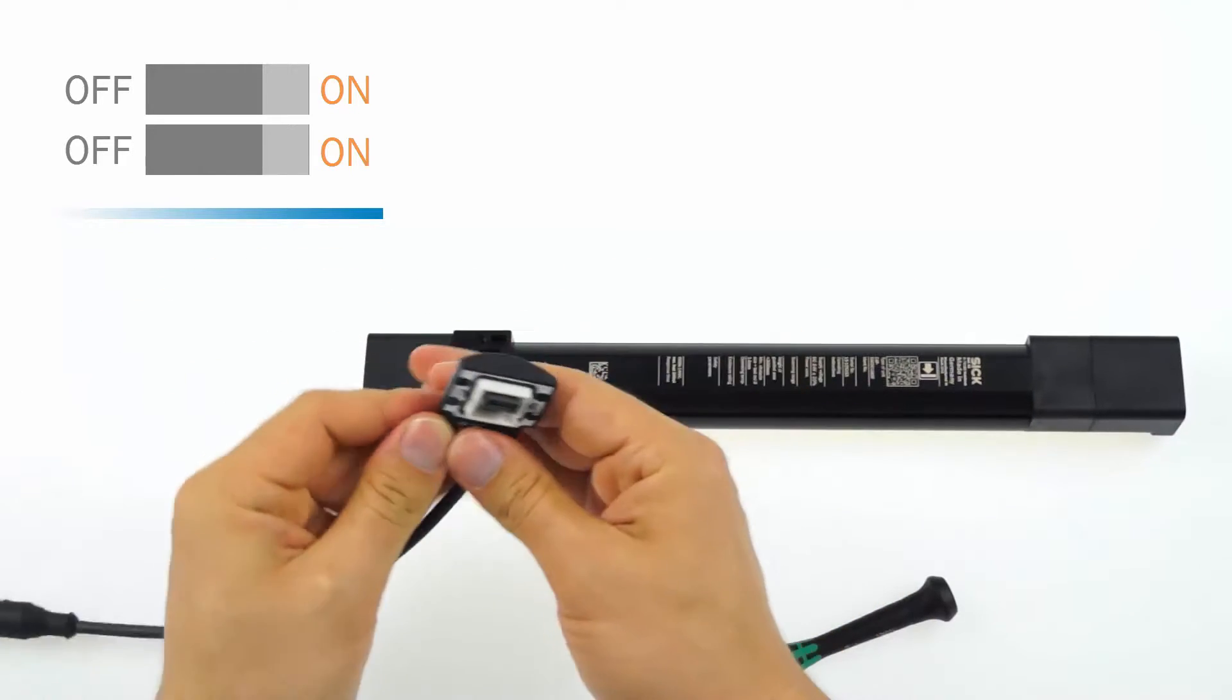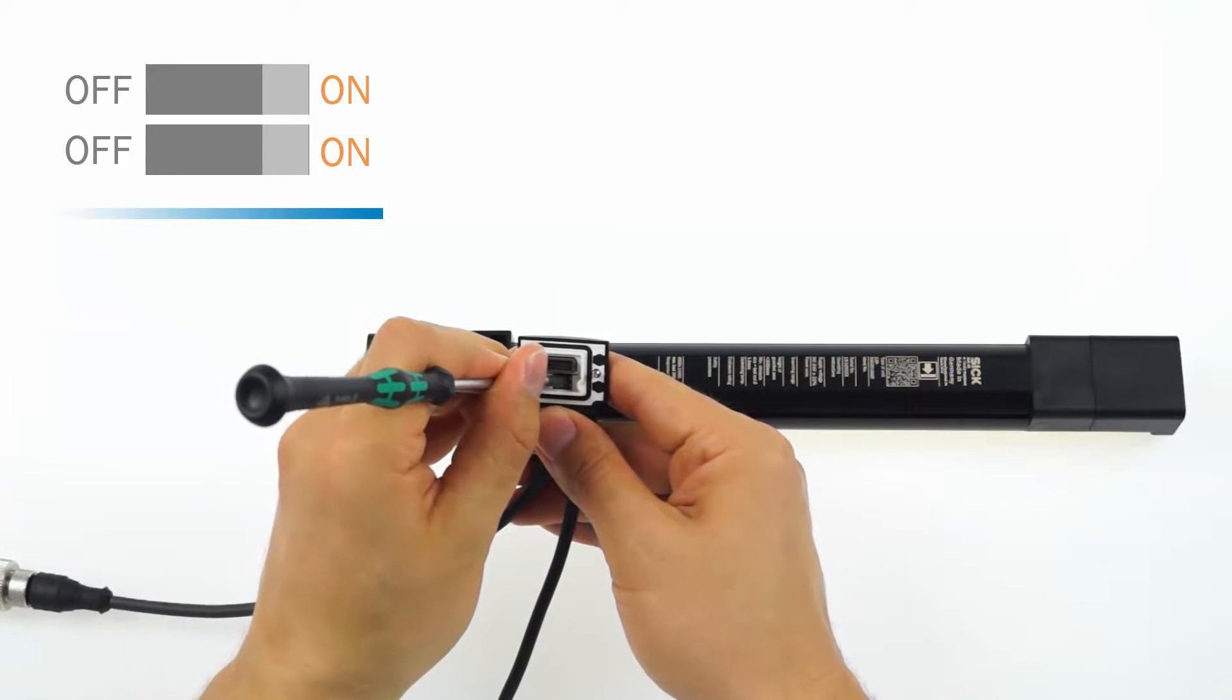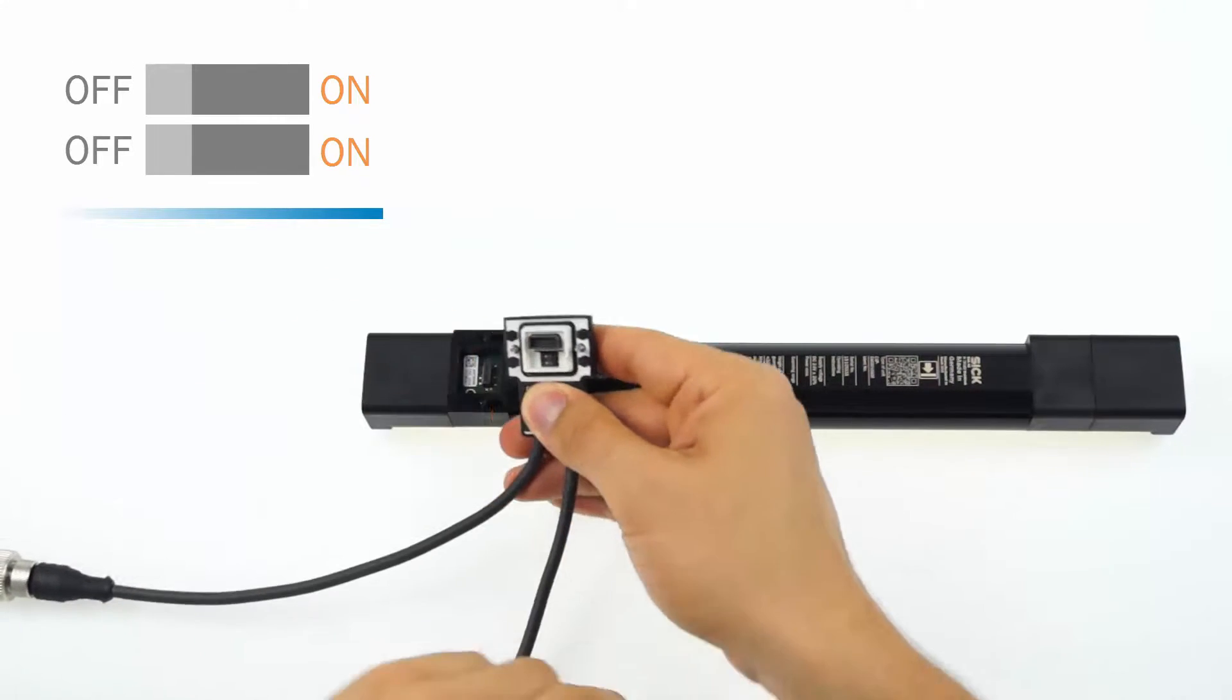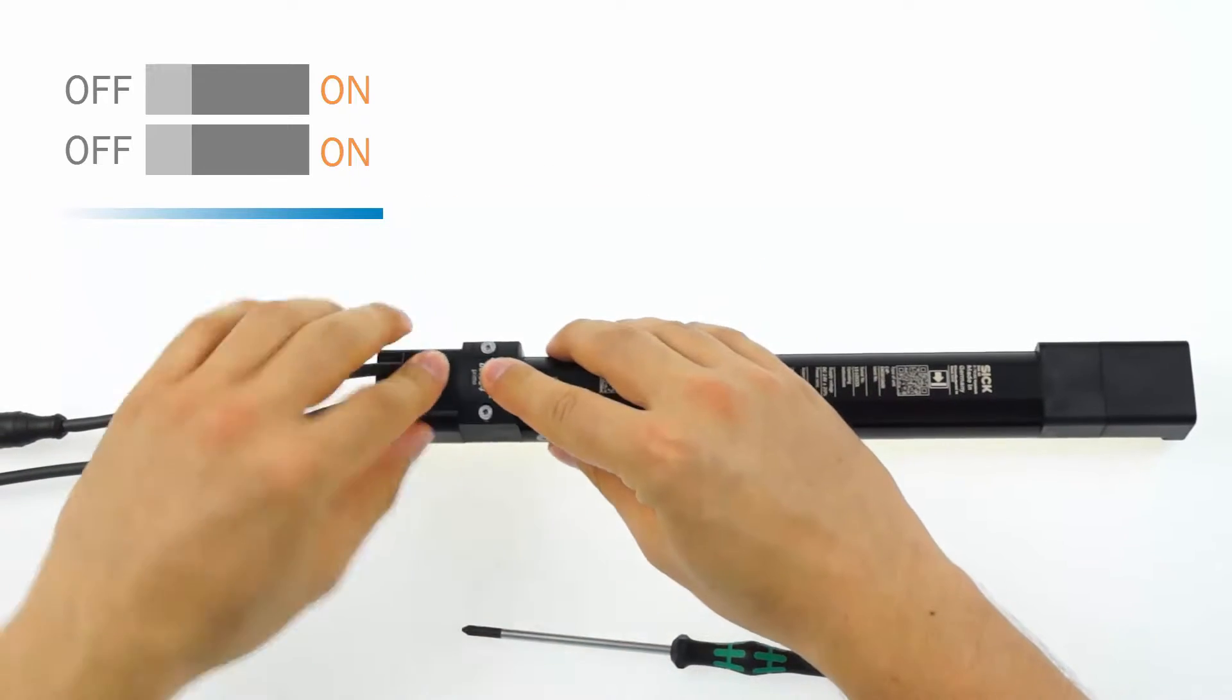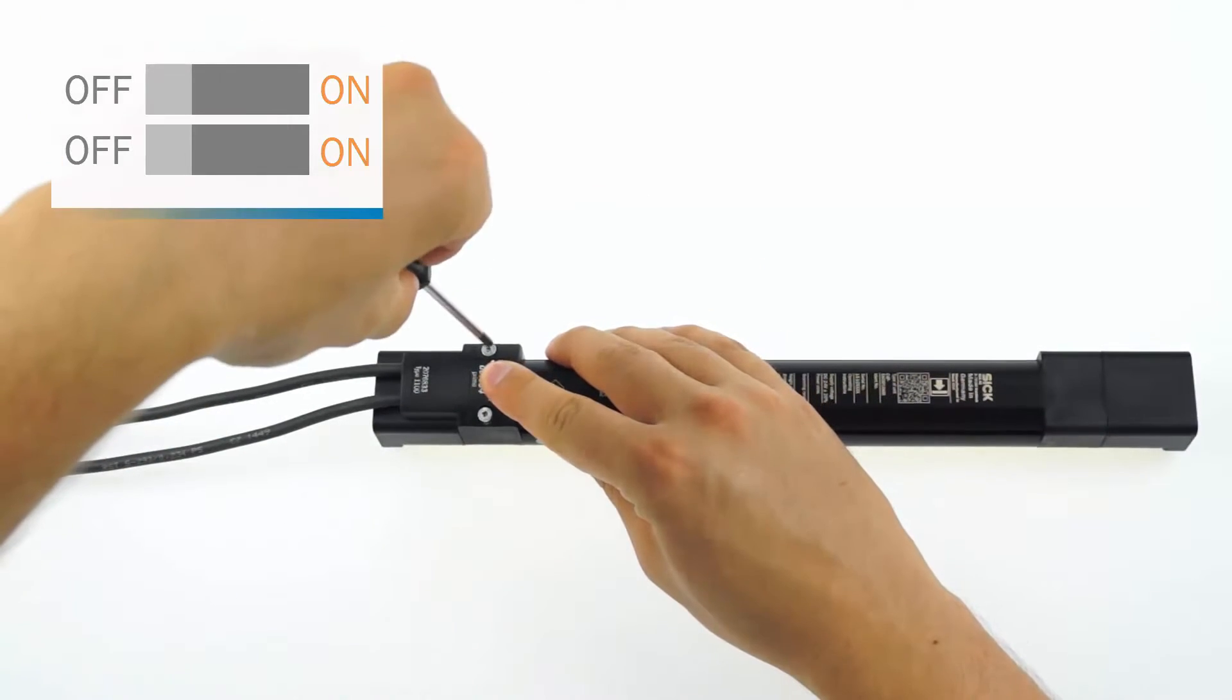In the second step, remove the system plug again and set both of the dip switches back to their initial position, which is off. Reconnect the system plug and then the power supply.